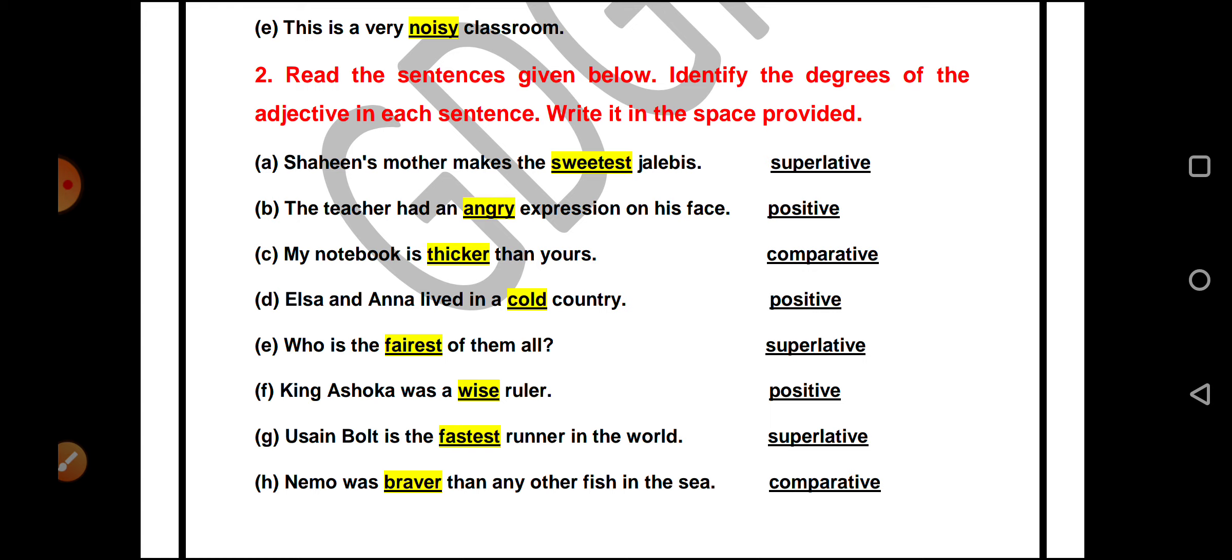Elsa and Anna lived in a cold country. No change again. So positive. Who is the fairest of them all? EST is here. So fairest will be superlative. King Ashoka was a wise ruler. Wise. There is no change here. It will be positive.